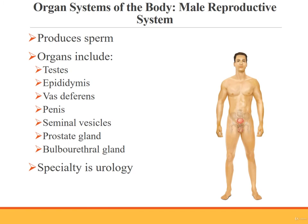The male reproductive system produces sperm for reproduction. Organs of the male reproductive system are the testes, epididymis, vas deferens, penis, seminal vesicles, prostate gland, and bulbourethral gland. Urologists specialize in the male reproductive system.